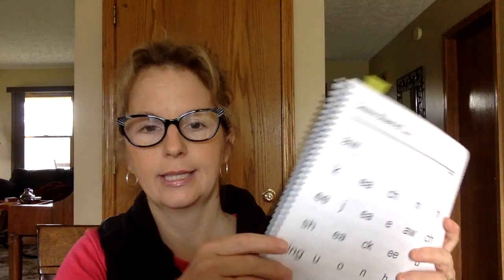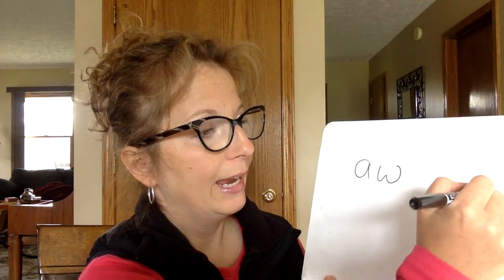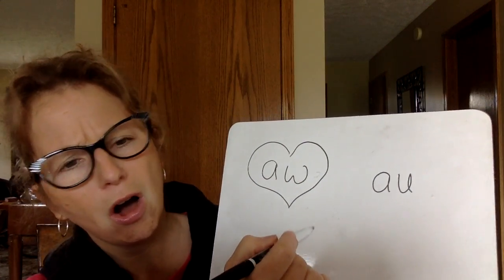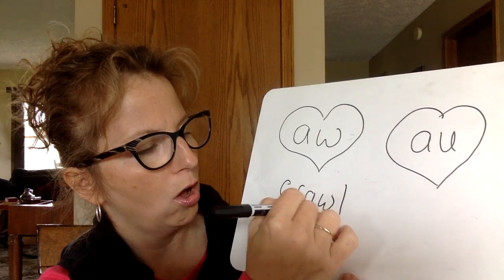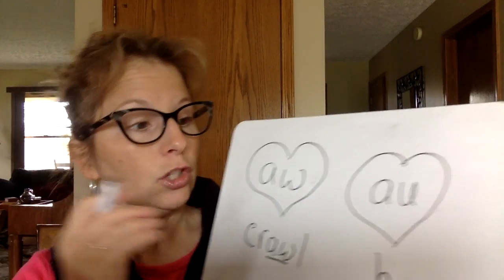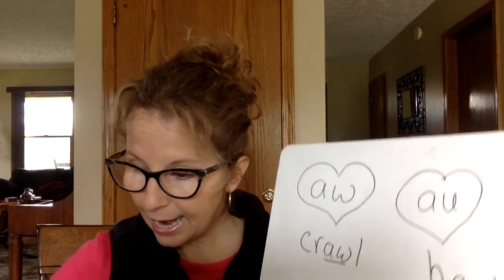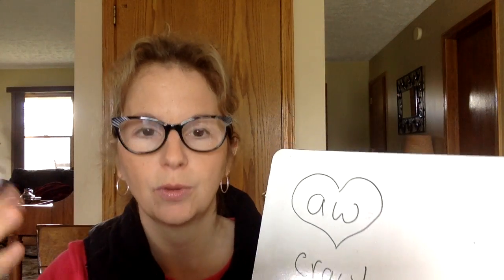Go ahead and erase that. We're going to end by going through our sound drill and looking at our new sound today: A-W says 'aw.' The secret story is that A-W and A-U absolutely love each other, so when they're together they make the sound 'aw.' You see these two pairs of lovebirds in words like 'crawl' — aw — and 'haul' — aw. You have to be familiar with words to know whether to choose A-W or A-U. Today we're just going to focus on A-W.